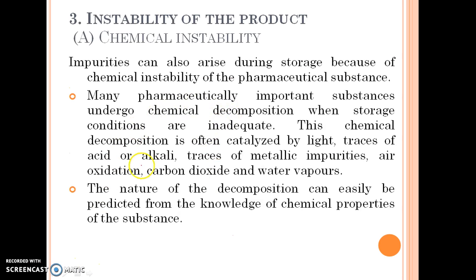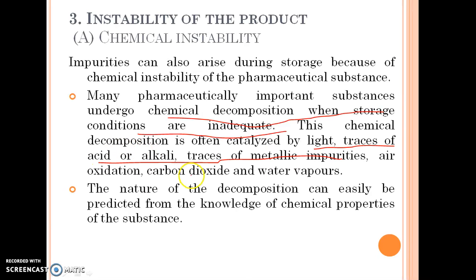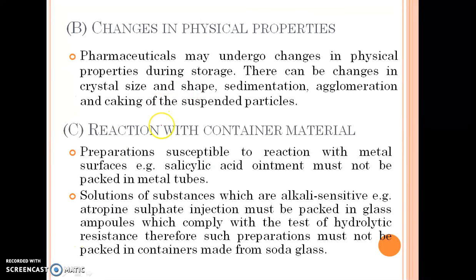Instability of the product: impurities can also arise during storage because of chemical instability of pharmaceutical substances. Many pharmaceutically important substances undergo chemical decomposition when storage conditions are inadequate. This chemical decomposition is often catalysed by light, traces of acid or alkali, traces of metallic impurities, air oxidation, carbon dioxide and water vapours. The nature of decomposition can easily be predicted from knowledge of the chemical properties of the substance. Changes in physical properties also lead to impurities. Pharmaceuticals may undergo changes in crystal size, shape, sedimentation, agglomeration and caking of suspended particles.